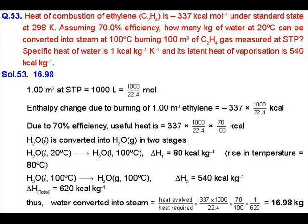To convert H₂O from liquid to gas there are two stages. First, we need to heat it from 20 degree Celsius to 100 degree Celsius, and then we need to provide additional heat in order to change its phase. So in order to increase its temperature from 20 to 100 degree Celsius, we need to provide heat according to the specific heat.